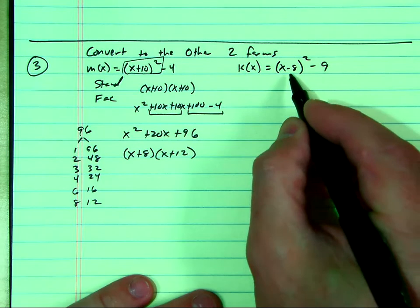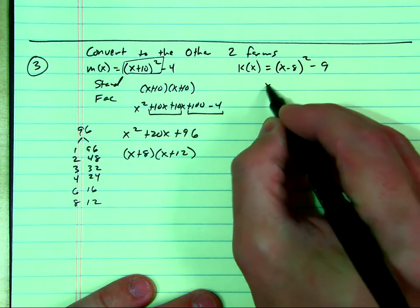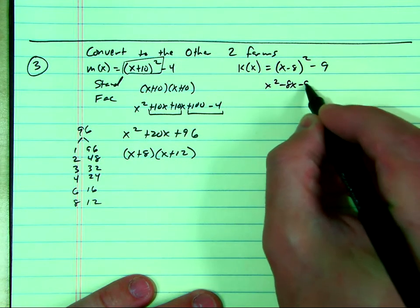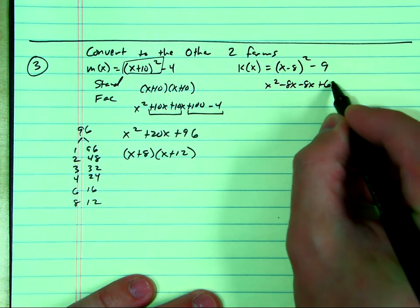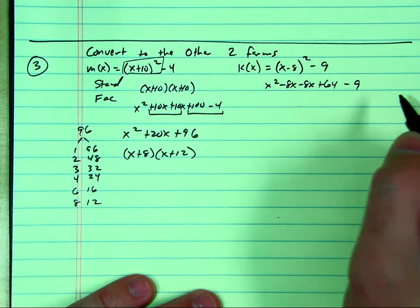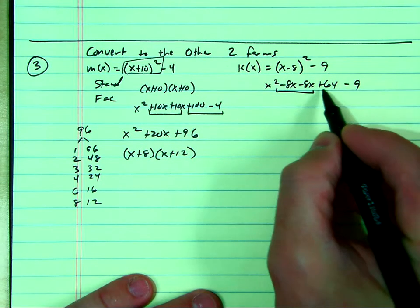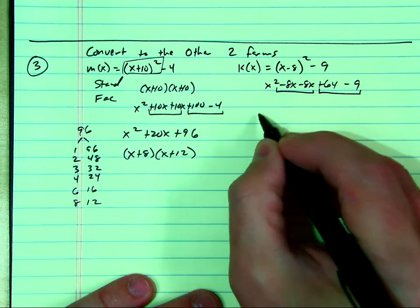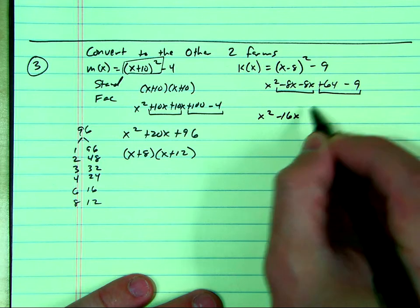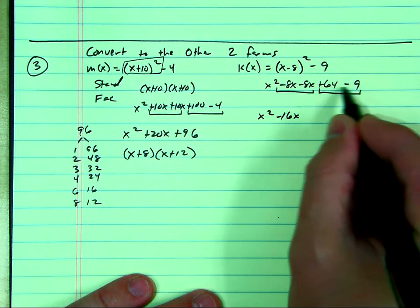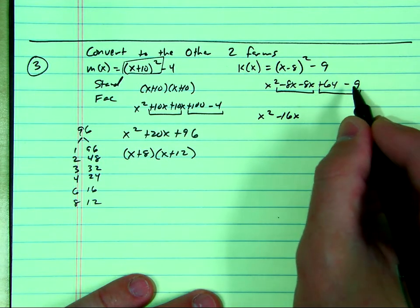Okay, let's do it again. Double distribute over here. x squared minus 8x minus 8x plus 64, then bring the minus 9 down to there. Again, two sets of like terms to collect. x squared minus 16x. What's 64 minus 9? Is that 55?